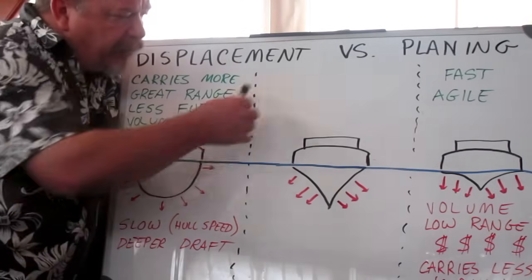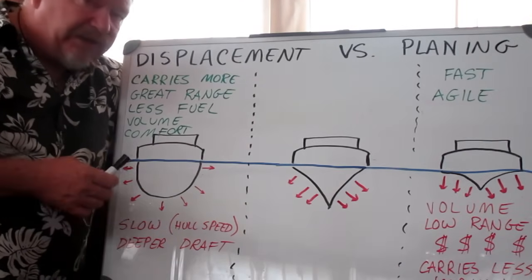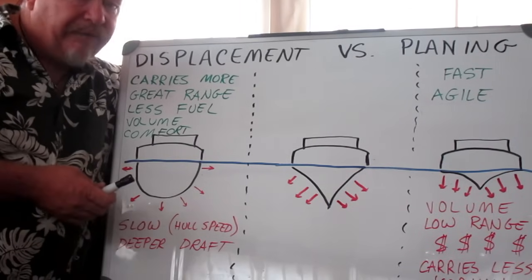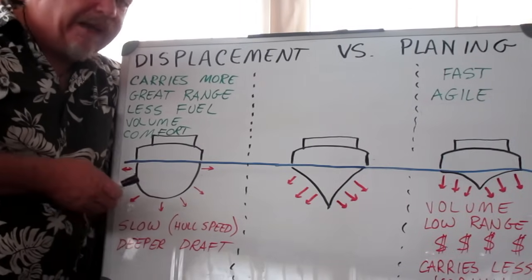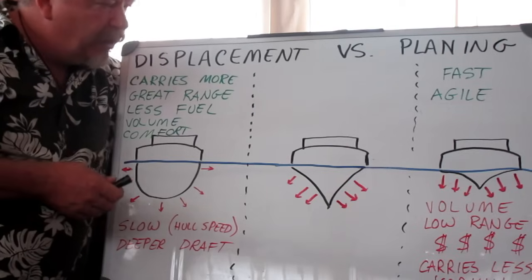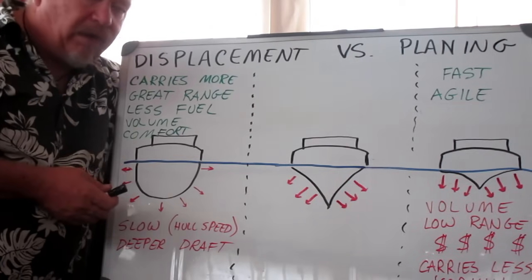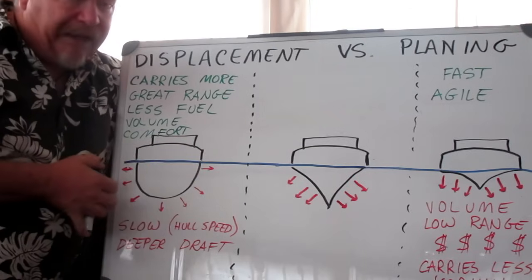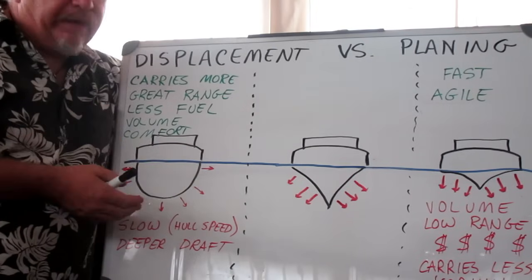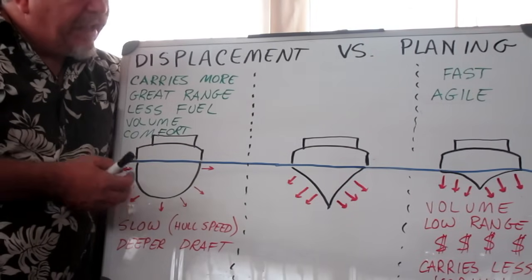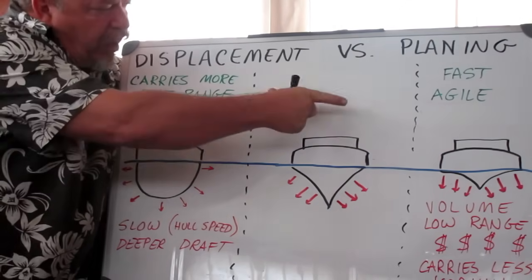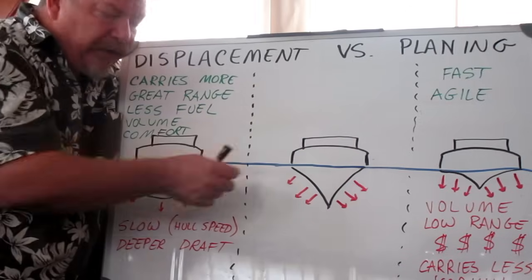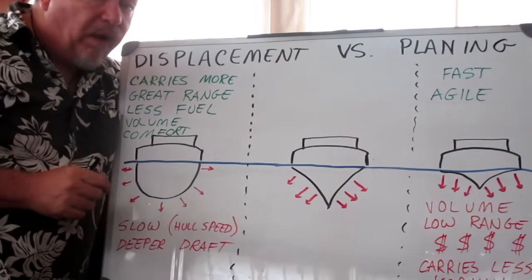In the middle of all this are semi-planing vessels or semi-displacement vessels, depending on how you want to term them. You'll hear terms like fast trawler and steep deadrise — there's a bewildering array of terms as boat designers try to draw the advantages of each type of vessel together to give you what you want.